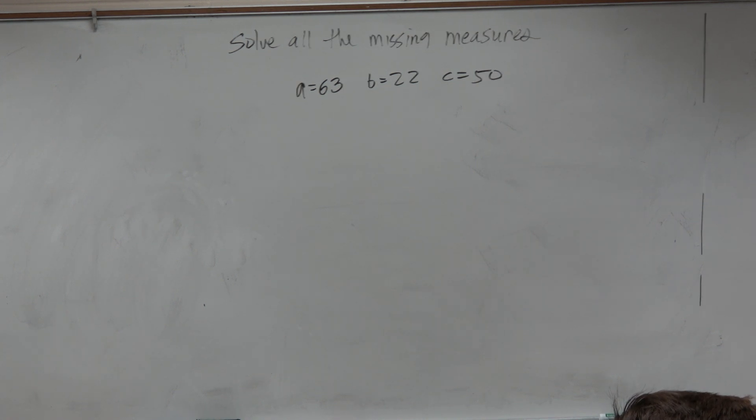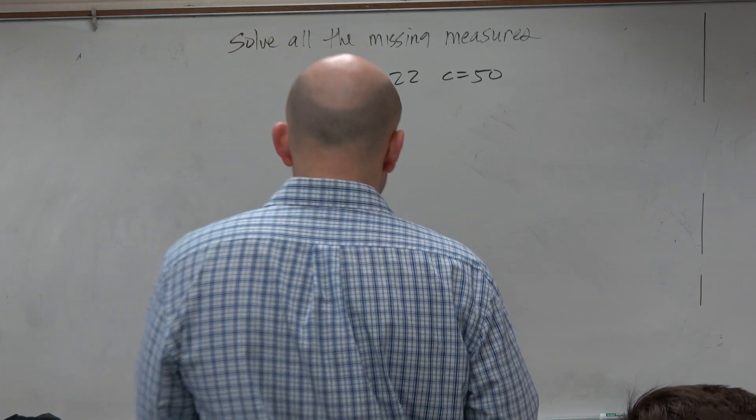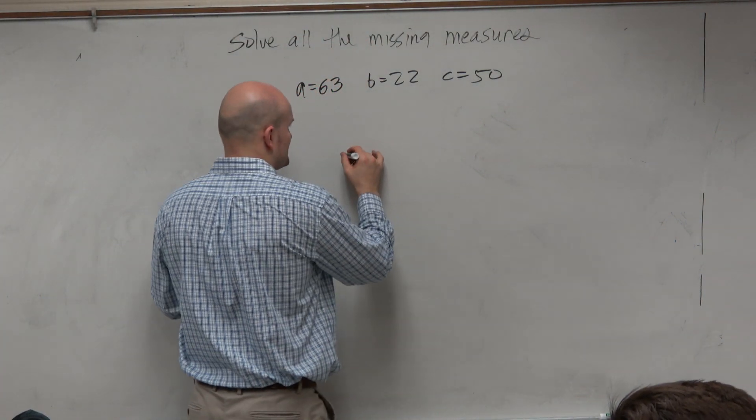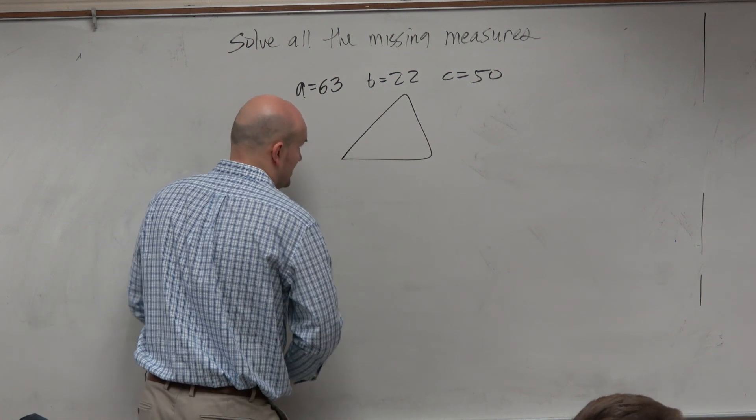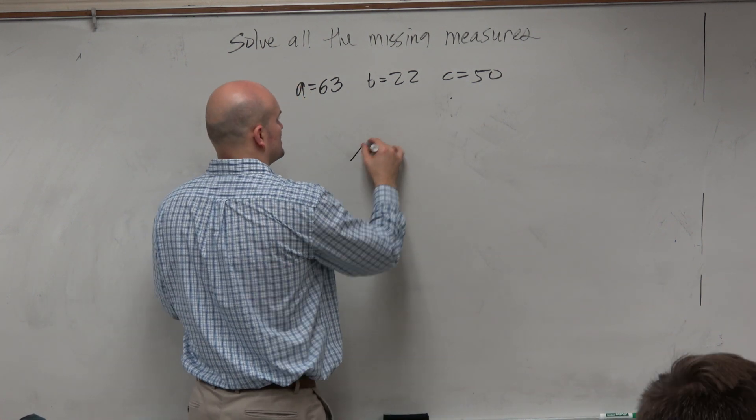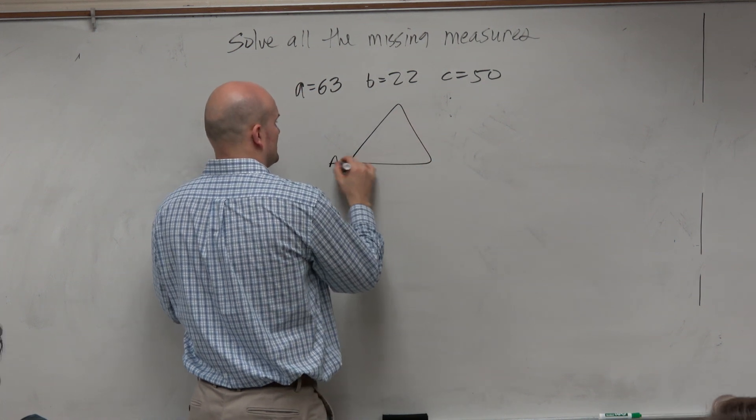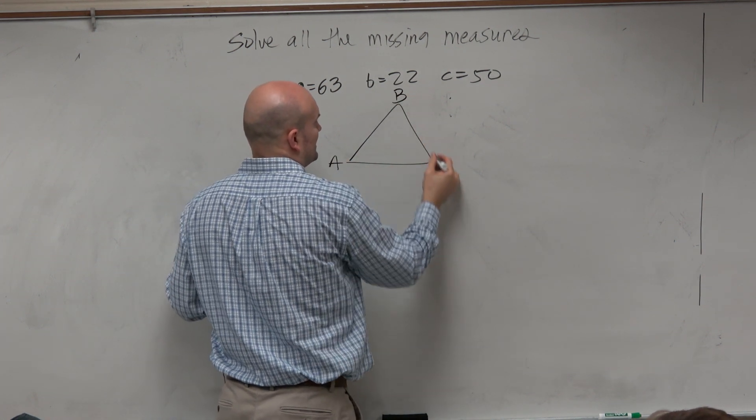So let's look at this example. In this example, first thing we want to do is draw a triangle. So we can draw a triangle any way we want to, but typically I've always kind of just drawn something like this. A, B, and C.